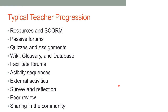As Martin talks about the way teachers use Moodle, he describes a typical teacher progression. In a typical situation, teachers would evolve their use in Moodle starting with resources and SCORM and content delivery. They might graduate up to passive forums like the news forum for announcements, then move on to quizzes and assignments — things that are a little more interactive. On to wikis, glossaries, and databases, which are more collaborative in nature. Then forums that allow students to interact and rate each other, then activity sequences, external activities, surveys, reflections, peer review. And ultimately he sees the pinnacle as teachers going out and sharing what they've done in the community at Moodle.org.